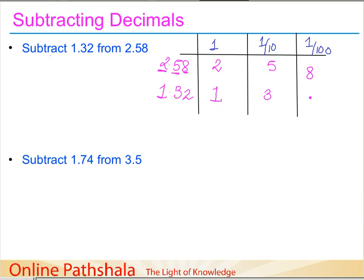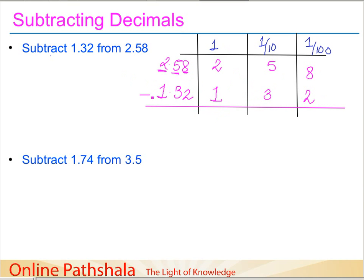And 2 comes in the hundredths place. If anyone is unclear on how to get this, I strongly recommend visiting the previous videos in the same playlist where we explained how to write a decimal in its place value system. Now, after converting to place value, let's perform the subtraction — it's the same as whole number subtraction with just a small addition.